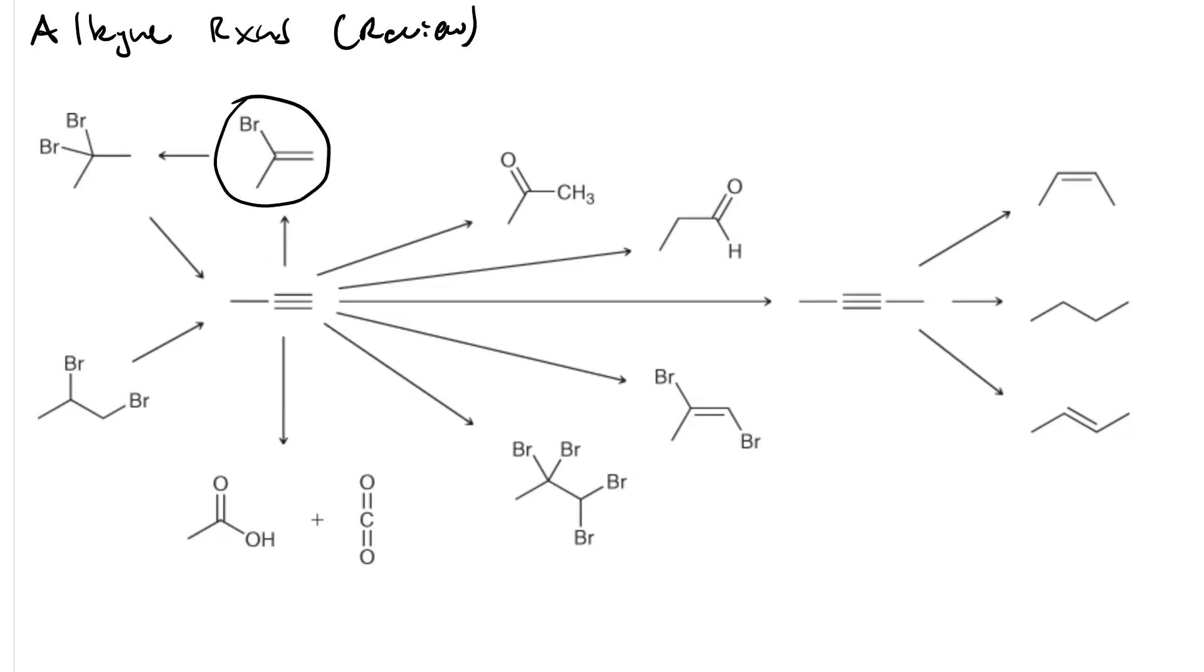And if we make the Markovnikov vinyl halide, that's just hydrobromination. One equivalent of HBr. If we wanted to then make that into the geminal alkyl dihalide, we'd use another equivalent of HBr.